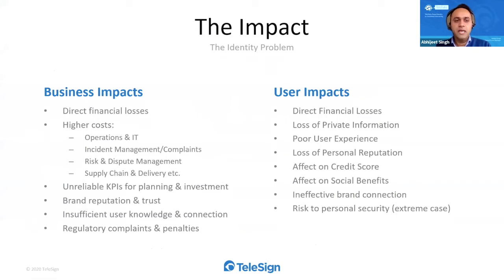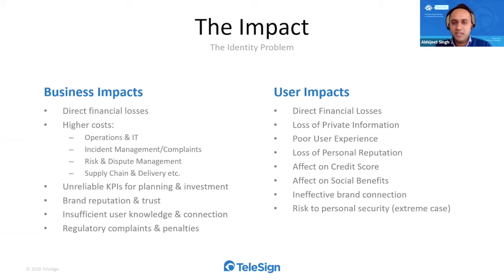Most businesses consider the impacts of false or synthetic identities and OTP inflation to be purely financial, but the impacts go much further. For businesses: increased cost of operations, incident management, customer experience management, skewed KPIs affecting planning, and potential regulatory compliance issues and penalties. For users: direct financial losses, poor user experience, loss of personal information, damage to credit scores, reputation harm to the business, and in some cases risk to personal security — even death.